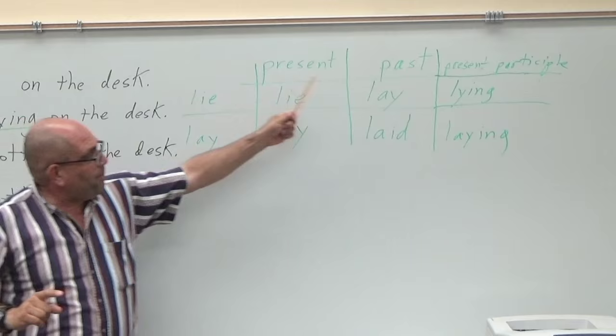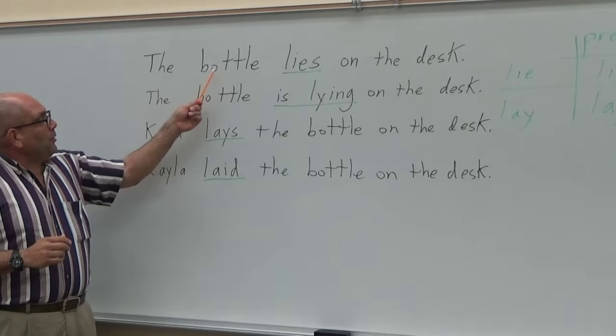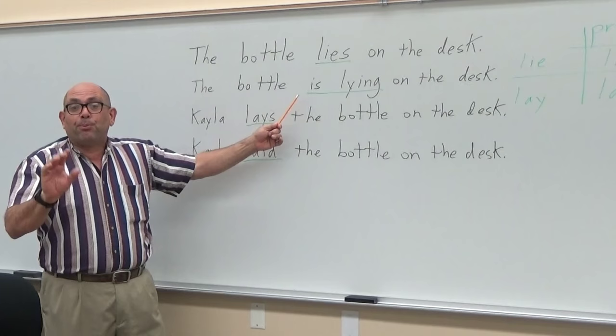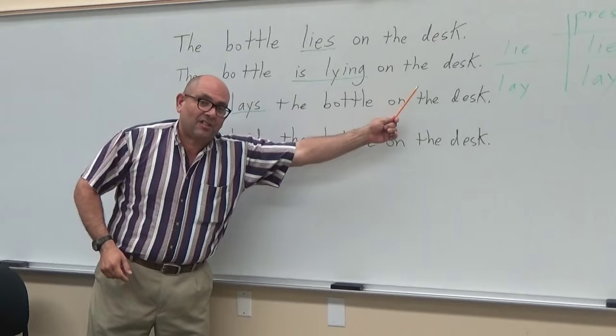Take a look at these sentences. The bottle lies on the desk. Nobody is doing anything to the bottle. Right now, the bottle simply lies on the desk. Now, if we want to use the present progressive, we say the bottle is lying on the desk. That's just what it's doing — it's lying on the desk.